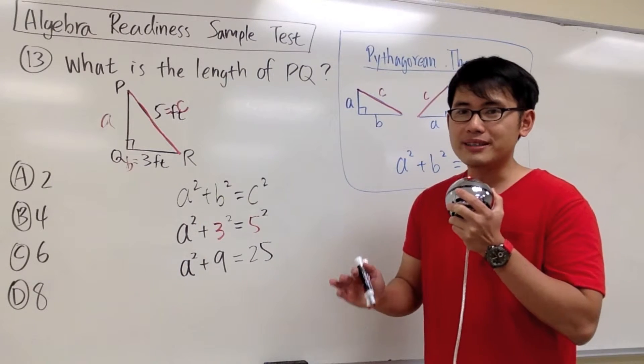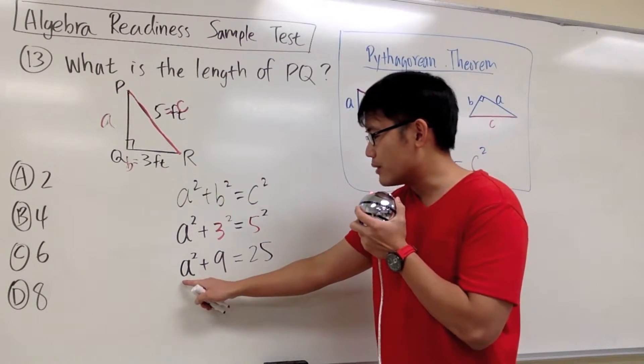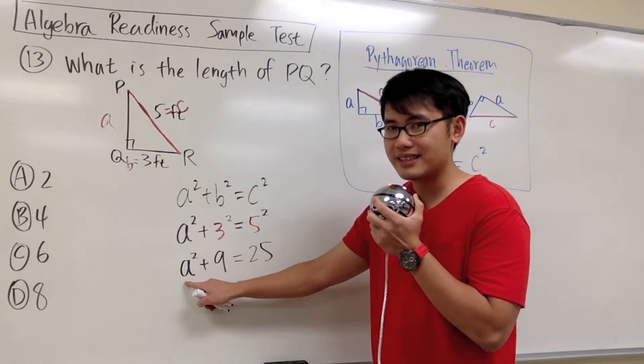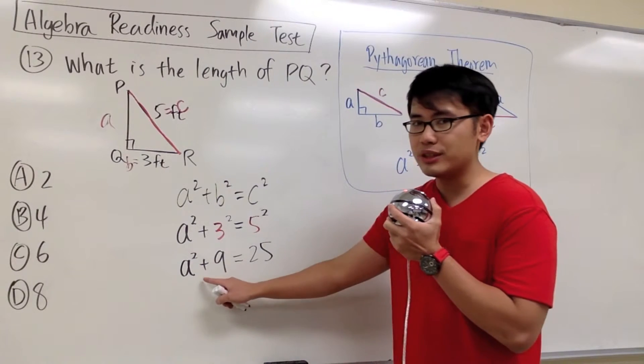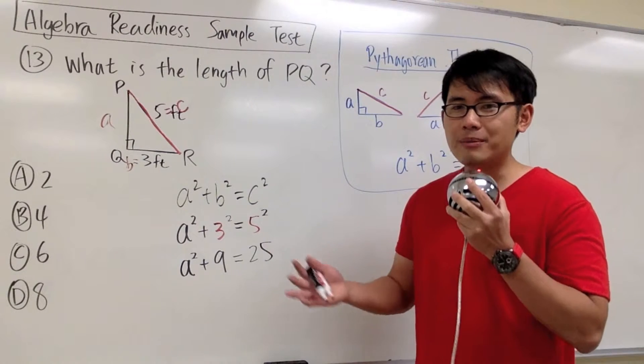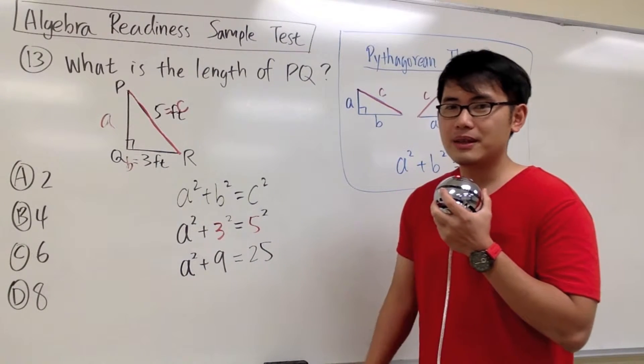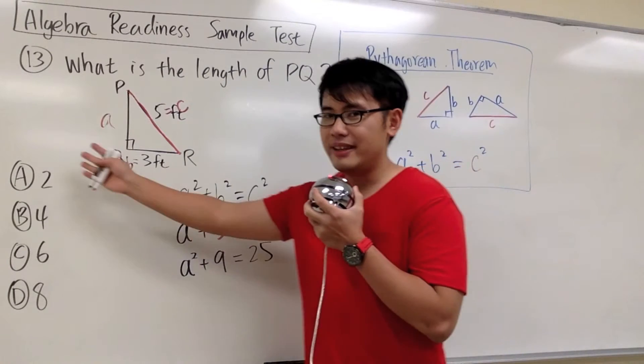Let me show you guys how we can get the answer at this stage. This question now is just asking us, A is a number that we don't know yet. After you raise that to a second power and then you plus 9 to it, you will end up with 25. It's kind of hard to think about what number can satisfy A, right? But we only have 4 possible answers.